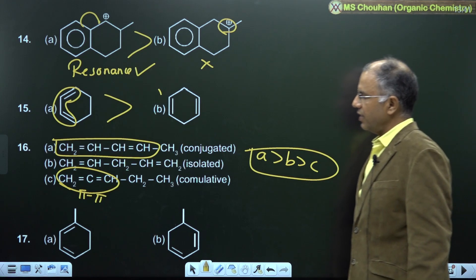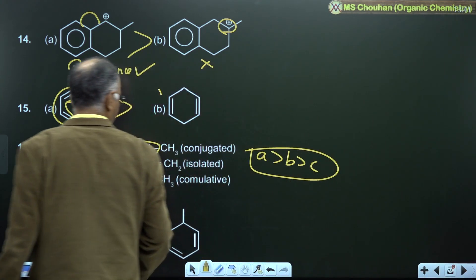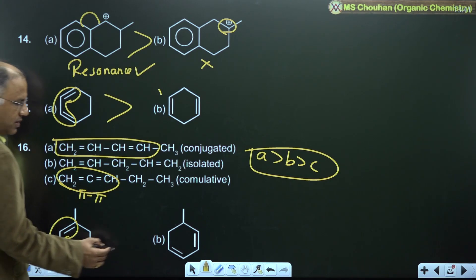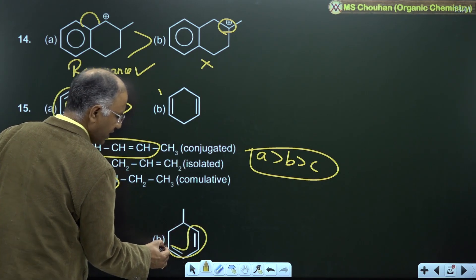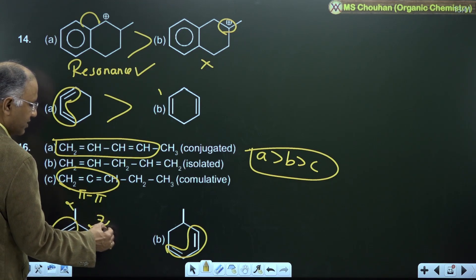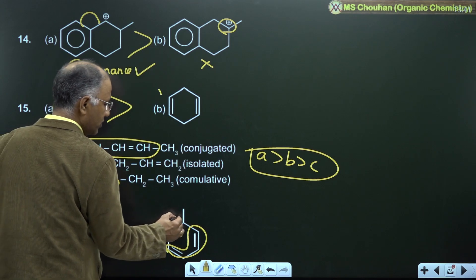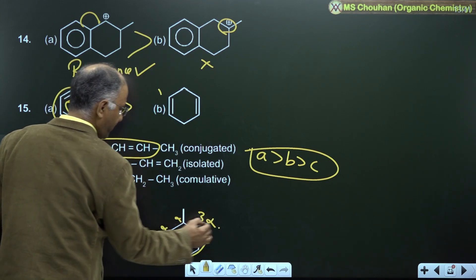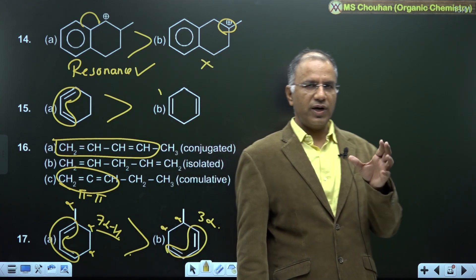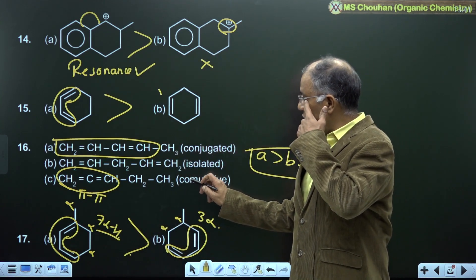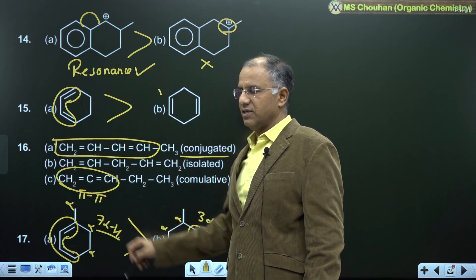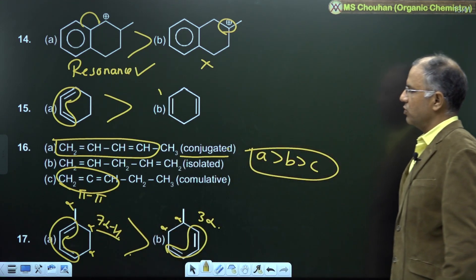For example 17: both are conjugated dienes, meaning both are resonance stabilized. Apart from conjugation, the first has 7 alpha-H and the second has 3 alpha-H. So the first is more stable than the second. Remember: first check conjugation, then apart from conjugation go for alpha-H (hyperconjugation).